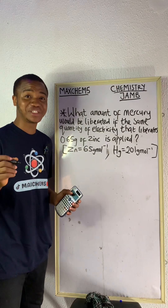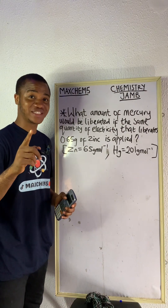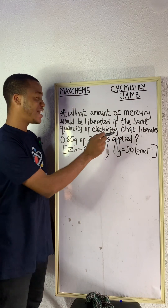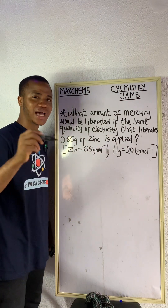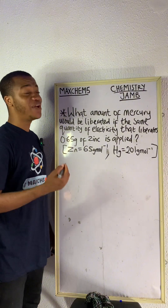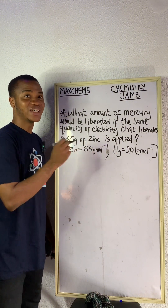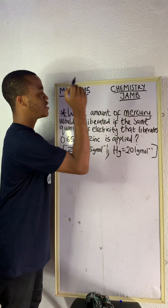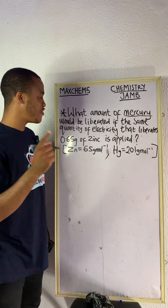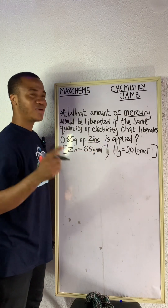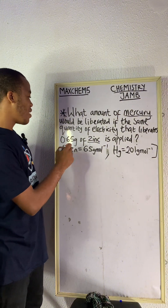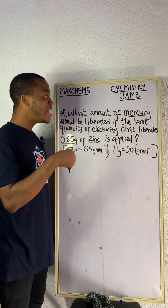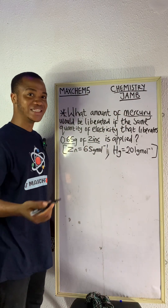Let's say you see this kind of simple question in your chemistry JAM exam — how would you solve it? The question says: what amount of mercury would be liberated if the same quantity of electricity that deposits 0.65 grams of zinc is applied? This is a very simple question from electrolysis. So let's solve it together. We are calculating the amount of mercury that will be liberated. We are given a reference which is zinc, and we need to calculate the amount of electricity that deposits 0.65 grams of zinc, then use that to find the amount of mercury.